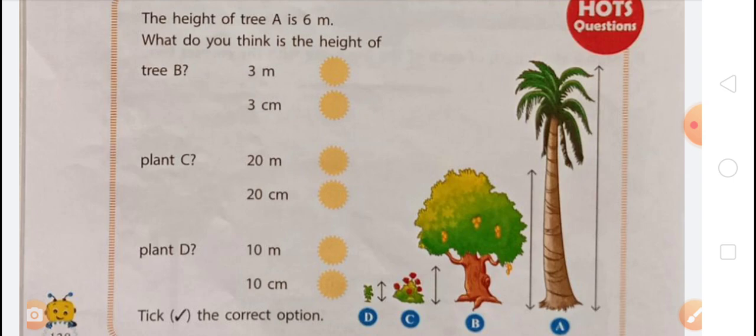Plant C can't be 20 meters because that is too large — it should be 20 centimeters, since it is smaller than tree B. Plant D is half the size of plant C, so plant D will be 10 centimeters, not 10 meters.